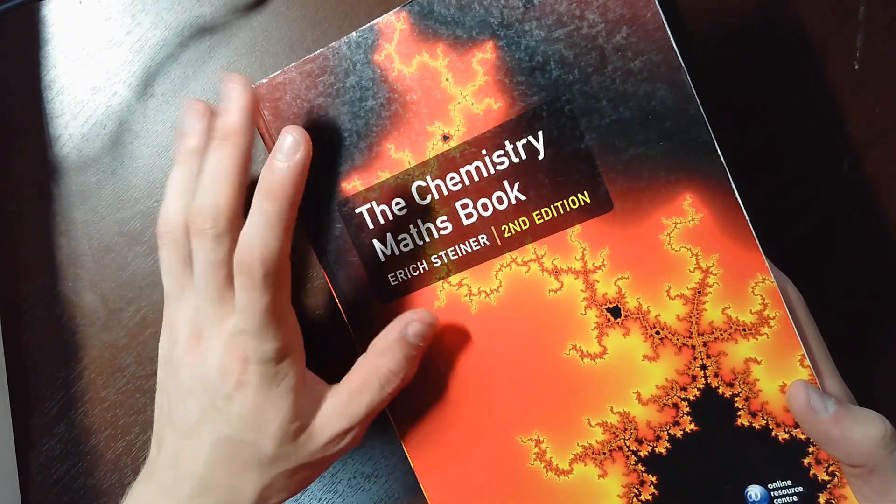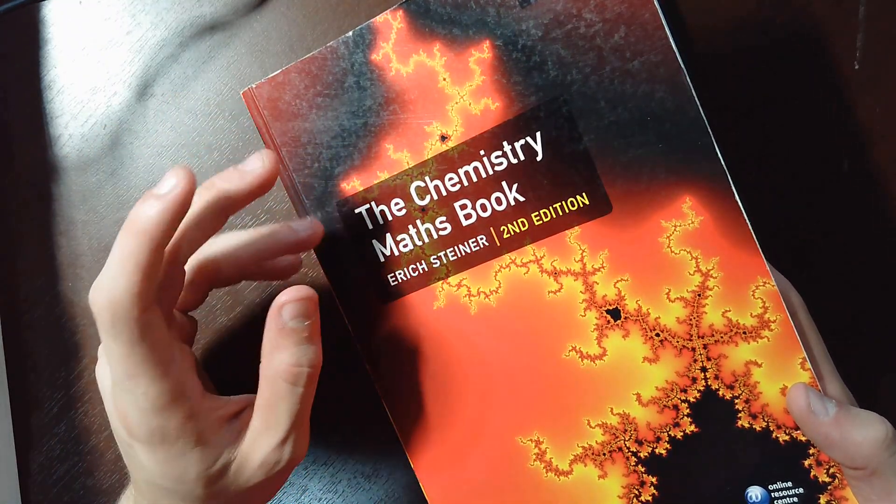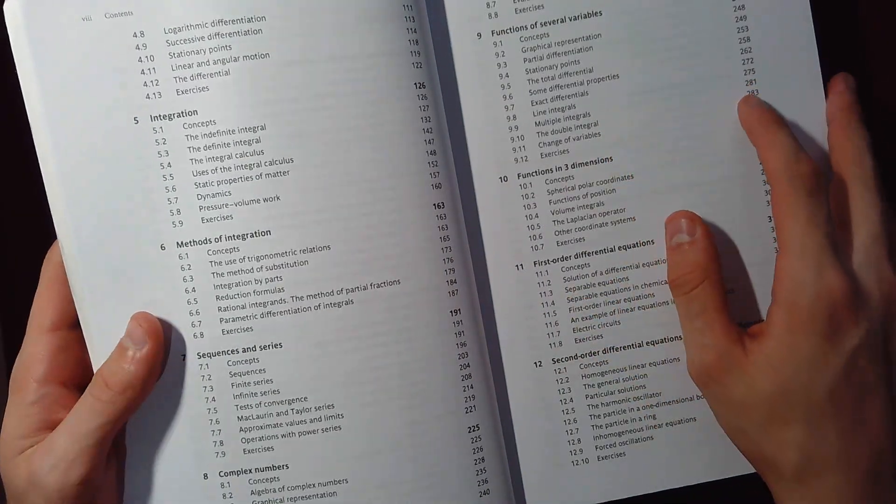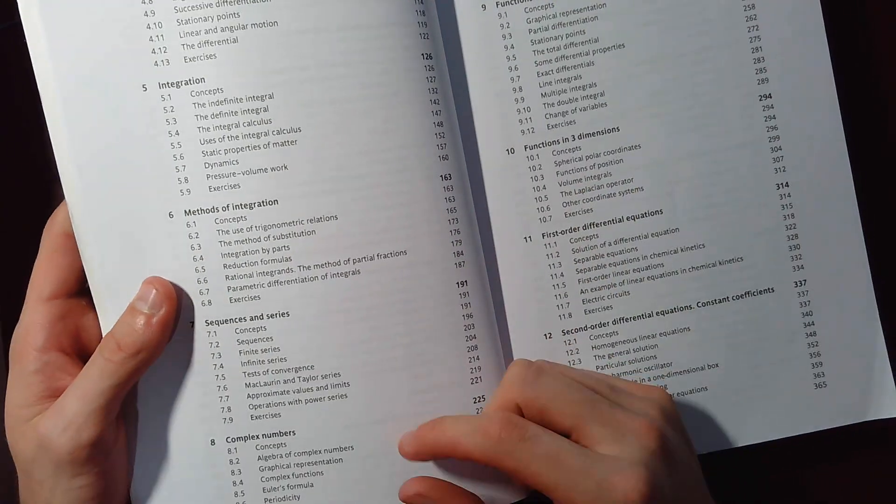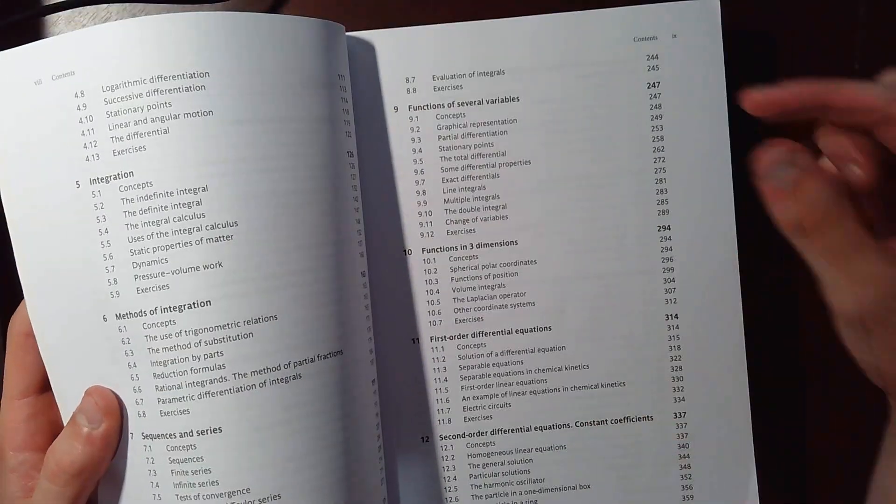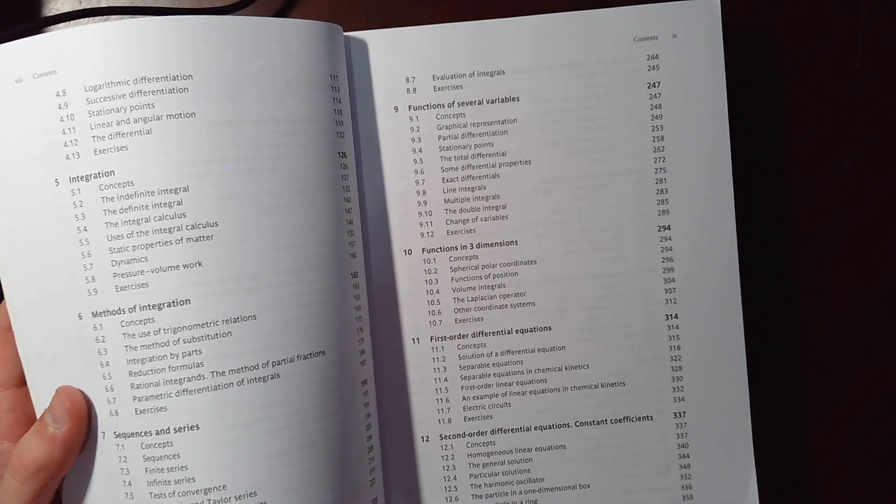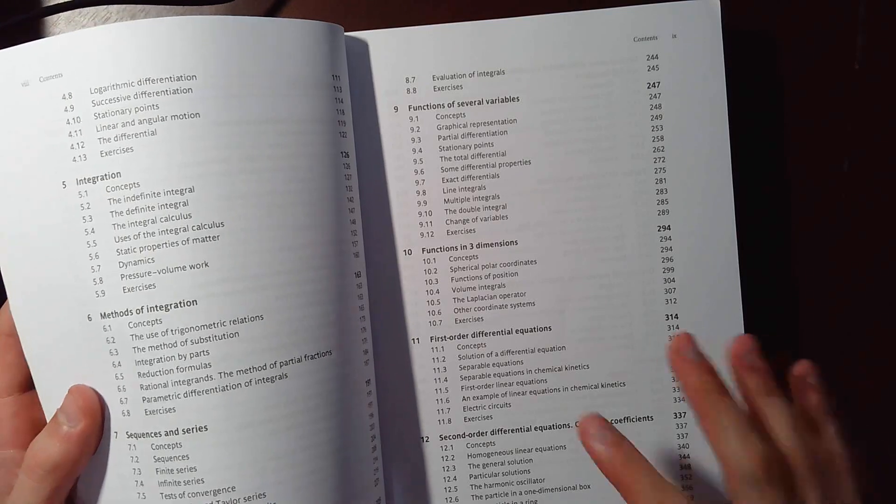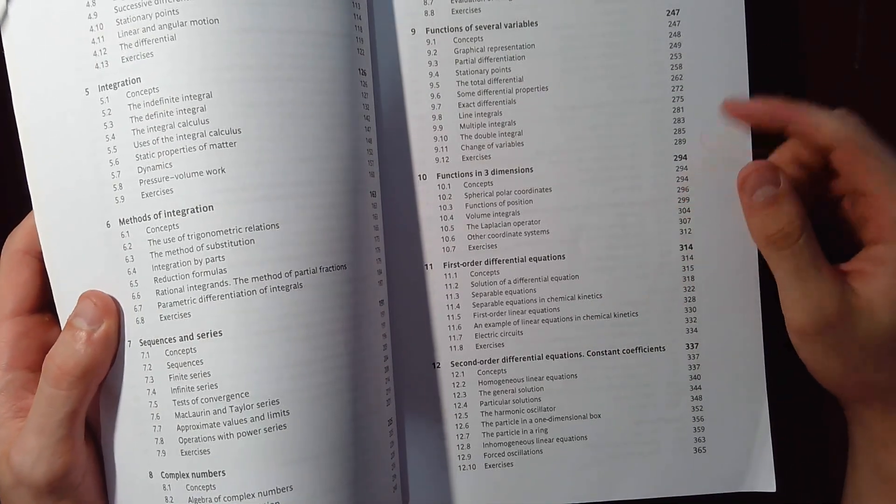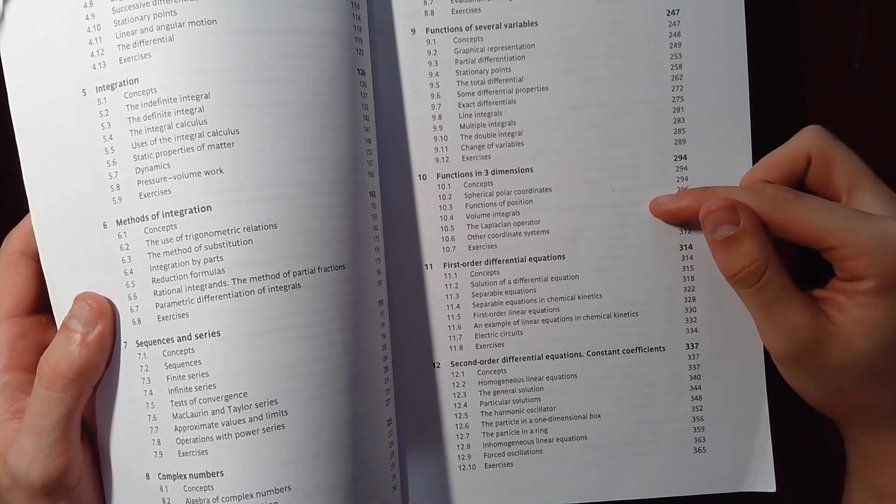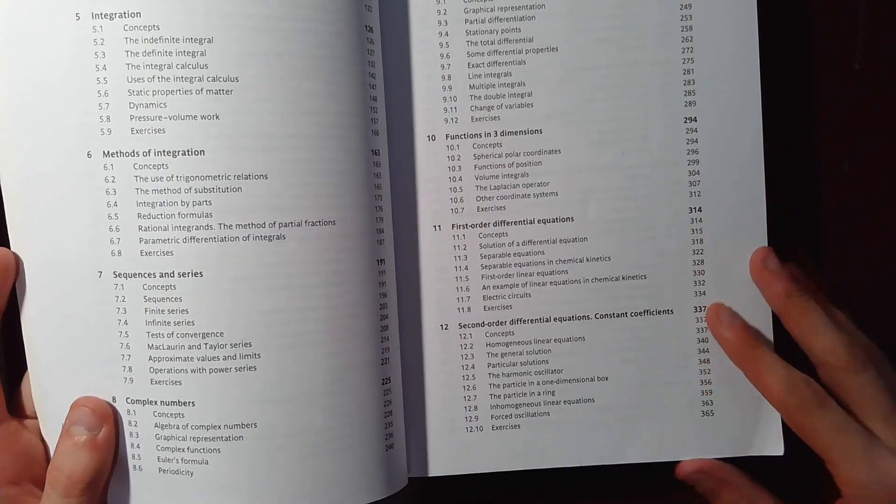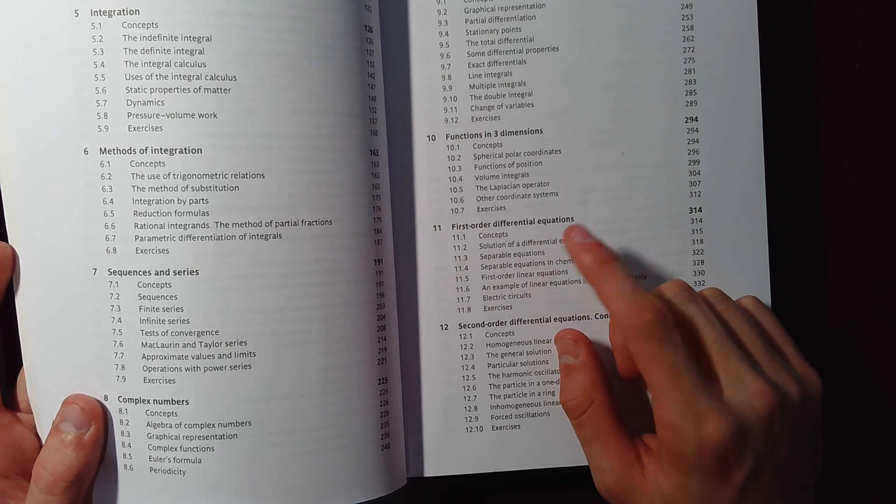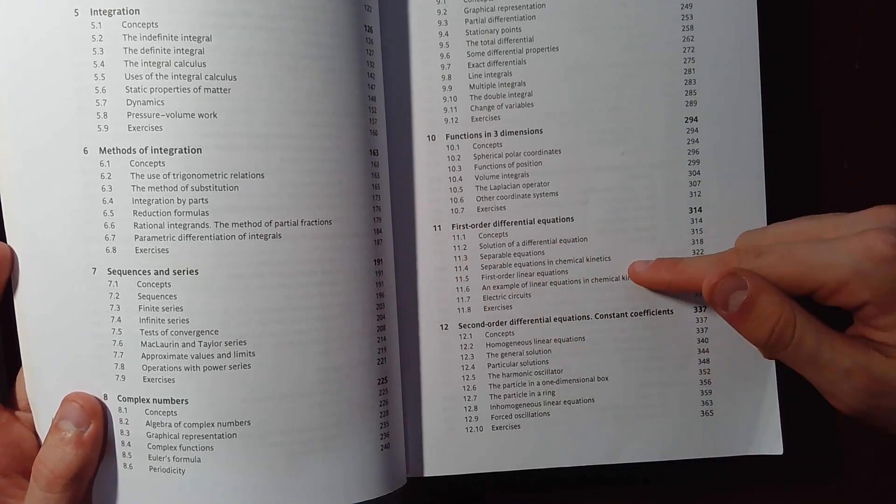Again, this is underrated. I think the title needs a change, because this is probably just the best hands down applied math book out there. Complex numbers goes in more depth about that. Functions of several variables. So that's basically like your functions that require two inputs to receive one output. Functions in three dimensions. So it probably goes over some vector calculus in here. First order differential equations. So it goes into some examples. It goes over how to basically solve some of them by separation of variables.